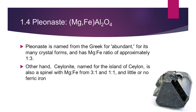Pleonaste takes its name from the Greek for 'abundant,' referring to its many crystal forms. In pleonaste, the magnesium to iron ratio is typically 1 to 3. Apart from that, there is another spinel variety called ceylonite, named for the island of Ceylon, which also contains magnesium and iron with different ratios — varying from 3:1 to 1:1.